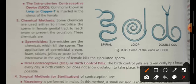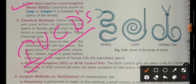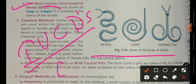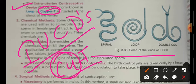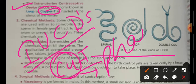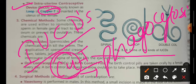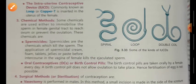Next, we have devices called intrauterine devices, or IUCDs. These are loop-like structures that help prevent implantation. One type is the Copper-T, which releases copper ions into the reproductive tract that affect sperm.